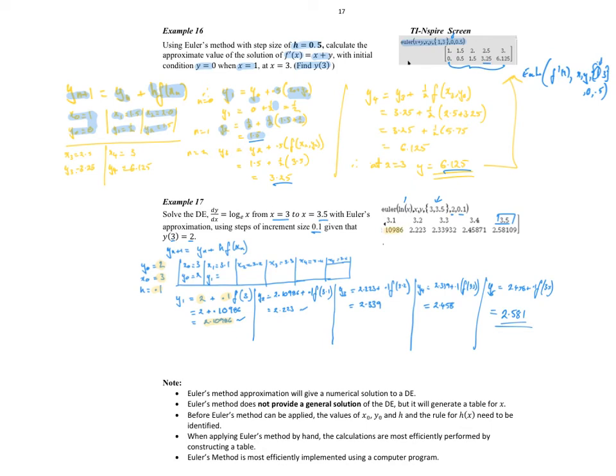y2 is the previous y value, 2.10986, plus 0.1 times the function evaluated at the next x value, which is 3 plus 0.1, which is 3.1. If we evaluate that on our CAS, we get our 2.23. You can see straight away that you can't actually do this problem involving a natural log of x without your calculator. And if you've got your calculator, well, you've got access to the function to actually generate the values.